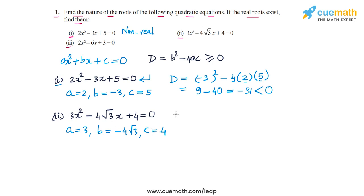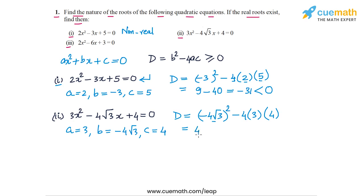Now let's calculate the discriminant. The discriminant is b² = (-4√3)² minus 4ac, so minus 4 times a which is 3 times c which is 4. Now (-4√3)² is 16 × 3 = 48, and minus 4 × 3 × 4 = 48. So the discriminant is equal to 0, which means that the roots are real but identical.